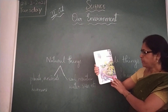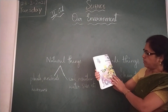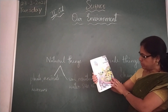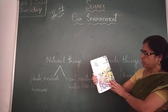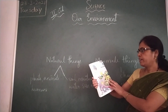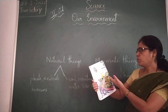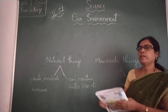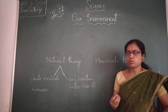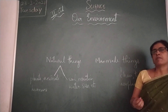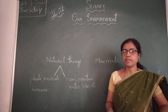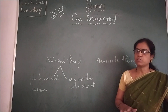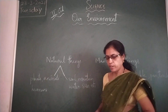You can see the picture here. You can see sun, plants, trees, and then children playing in the garden with a dog and boys riding a cycle. You can also see mountains, clouds, and so many houses. All these things around us — natural and man-made — together make our environment.